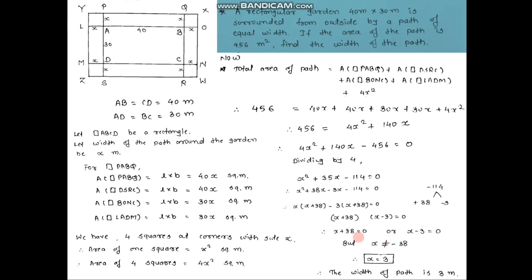Solving: x + 38 = 0 gives x = −38, which is not possible because the length of a side cannot be negative. Therefore x − 3 = 0, which gives x = 3. So the width of the path is 3 meters.